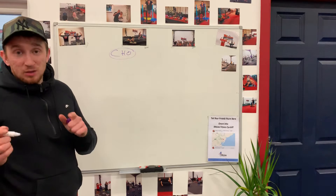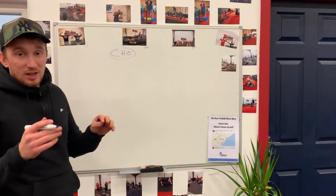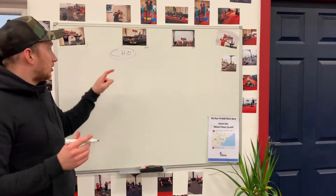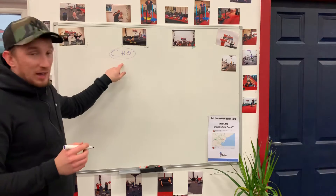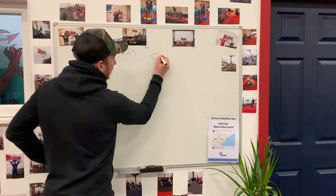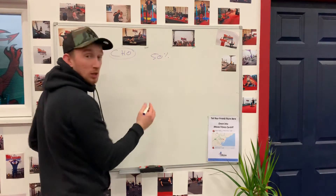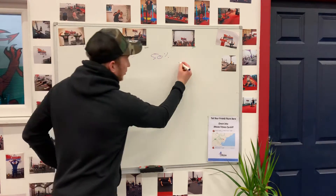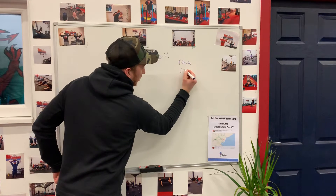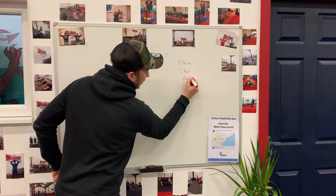When you're using MyFitnessPal, you need to go into the settings and change the macronutrients to have carbohydrates as 50%. Okay, so we've got protein, we've got carbs, we've got fat.